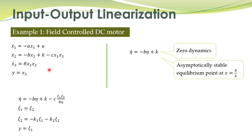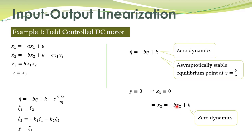We set y identically equal to zero, which means x3 is identically equal to zero, because the output y equals x3. If x3 is zero, the equation transforms accordingly. From this we obtain the zero dynamics of the system directly, and we can study their stability. The zero dynamics are clearly stable.